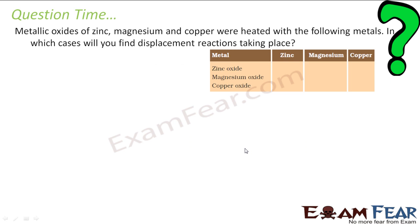So the question says the metallic oxide of zinc, magnesium and copper are heated in the following metals, which of this will have a displacement reaction. So we know that magnesium is stronger than zinc, is stronger than copper. This we know. Because we have magnesium, zinc and copper involved, this series we know. So zinc will not react with zinc oxide.